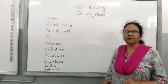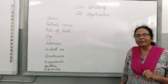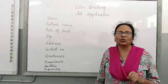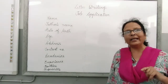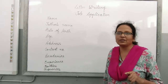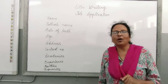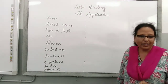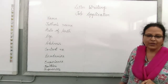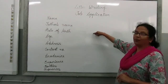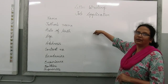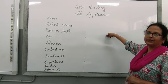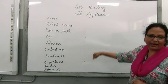Now for date of birth — remember you are not 18 years old. You are 28 or 25 years old when you apply for a job. So your date of birth can have the same date and month, but the year will be different. Please keep this in mind.